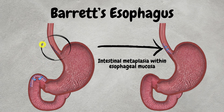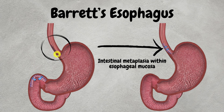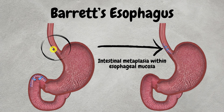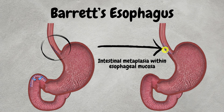Here we can see the esophagus, and below we have the stomach and then the intestine. The esophagus is lined by squamous epithelium and the intestine is lined by columnar cells. Additionally, there are some goblet cells in the intestine — this is very important. If the lining epithelium of the esophagus changes from squamous to columnar epithelium with goblet cells, just like the intestine, then this condition is known as intestinal metaplasia within esophageal mucosa. The squamous cells of the esophageal mucosa have transformed into intestinal epithelium, and this cellular transformation from one type to another type is known as metaplasia.